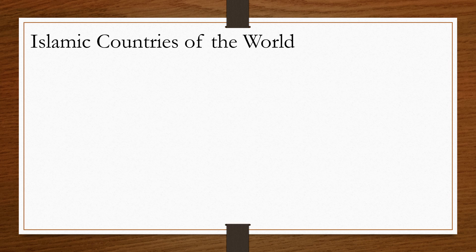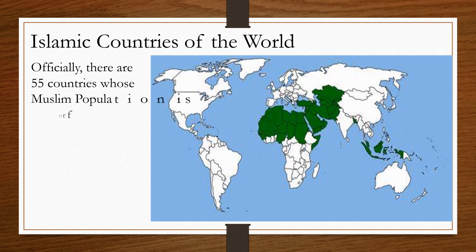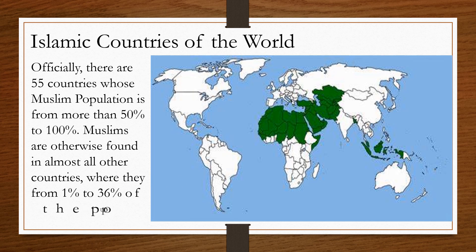Islamic countries of the world. For this topic, we will take the Muslim world to mean those countries whose governments have declared that they are Islamic states — for example, Iran and Saudi Arabia — and those countries where the majority of the population is Muslim. Officially there are 55 countries whose Muslim population is from more than 50 percent to 100 percent. Muslims are otherwise found in almost all other countries, where they are from 1 percent to 36 percent of the population.